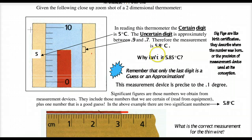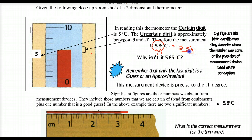I got 5.8 because of the number I'm certain of and because of my guess. These two numbers came from a measurement device, so we say we have two significant figures. Two significant figures means those numbers came directly from a measurement device.